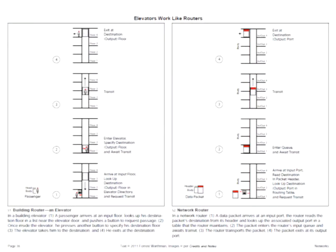Elevators in cities work like routers. In step one, a person arrives at an input floor, looks up their destination floor on the directory posted next to the elevator, and pushes a button to request transit. In step two, they get in and push the button that specifies their output floor. The elevator takes them there and they get out. Similarly, a router receives a packet at an input port, looks at the header for the destination address, determines the output port, places it in the input queue, and the switch function transports it to the output port.